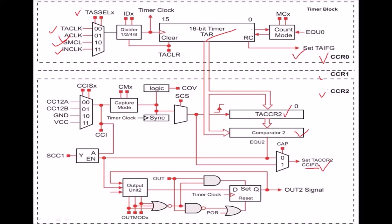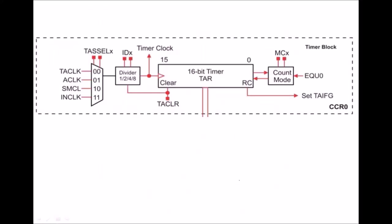There are different count modes available for this timer, and to select the count mode, the MCX bits are used. There are 4 count modes. This is the working of the timer. All these blocks are used for the capture and compare model. This block is used for the timer, and there is a compare register which compares the contents of the TAR register with the capture-compare register.